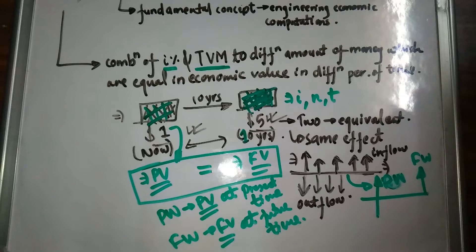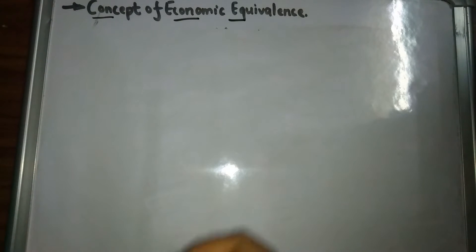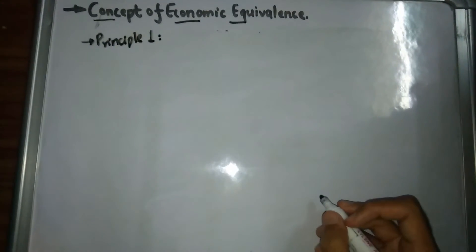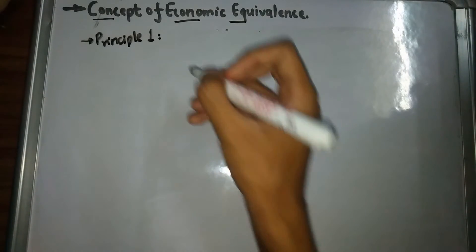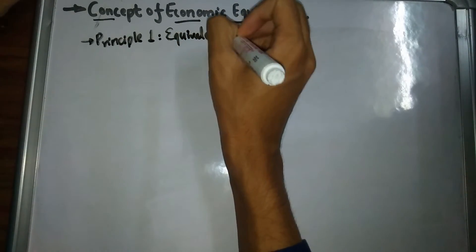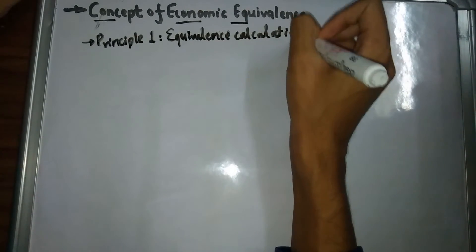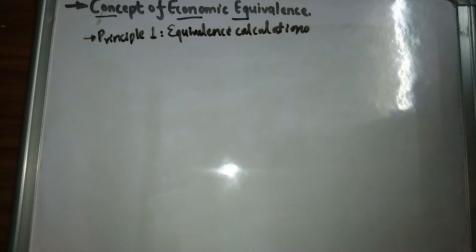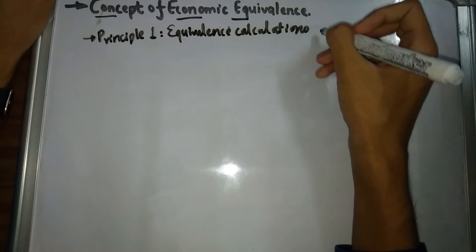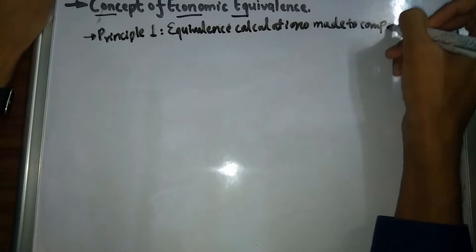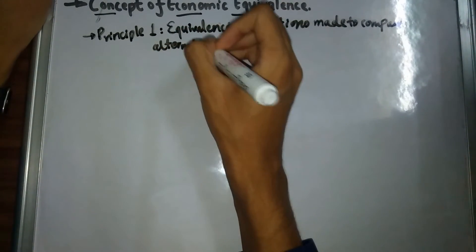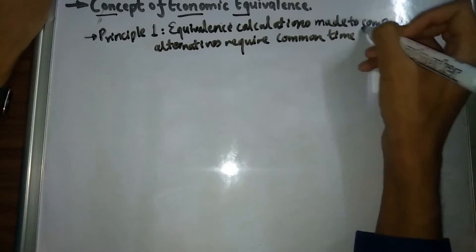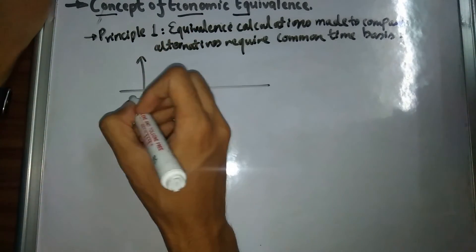Now let's talk about different principles related to economic equivalence. Principle one tells us that equivalence calculations made to compare alternatives require a common time basis. We convert all cash flows into a single cash flow in order to compare different alternatives and determine which is the best option.